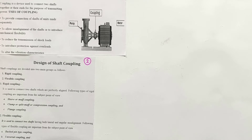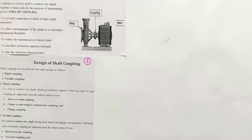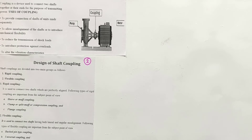In our syllabus, two major types of coupling are mentioned: one is rigid flange coupling and the second is flexible bush pin type coupling. Before studying those, let's understand what a coupling is. A coupling is a mechanical device that helps connect two rotating shafts in such a way that it can transmit power, motion, and torque very easily.